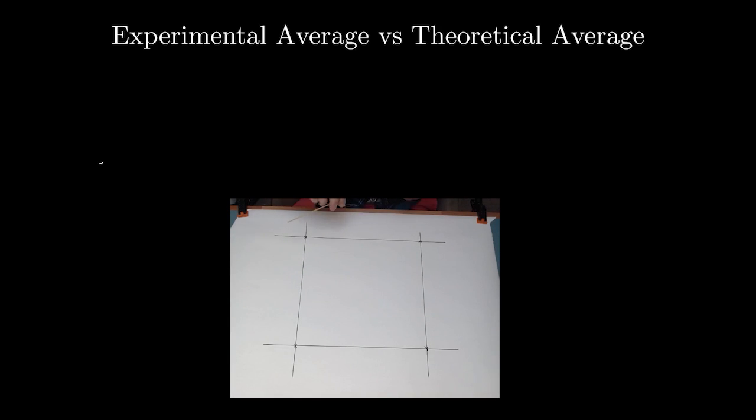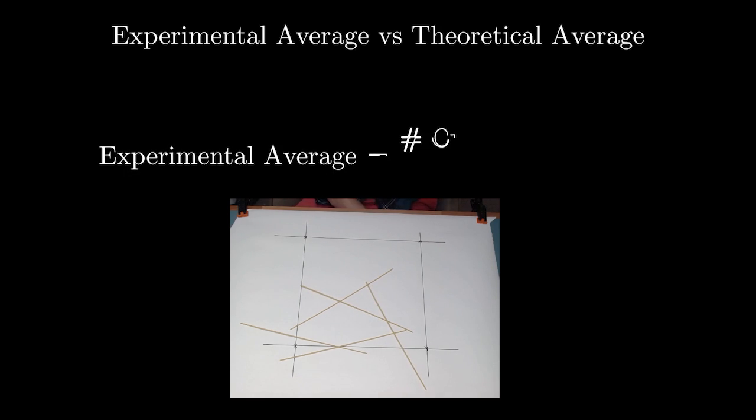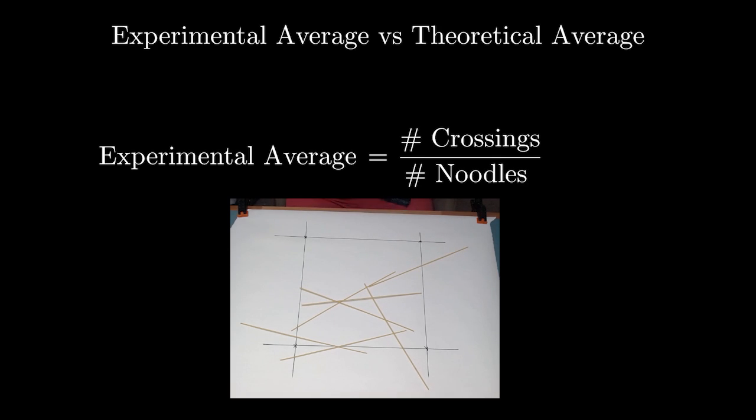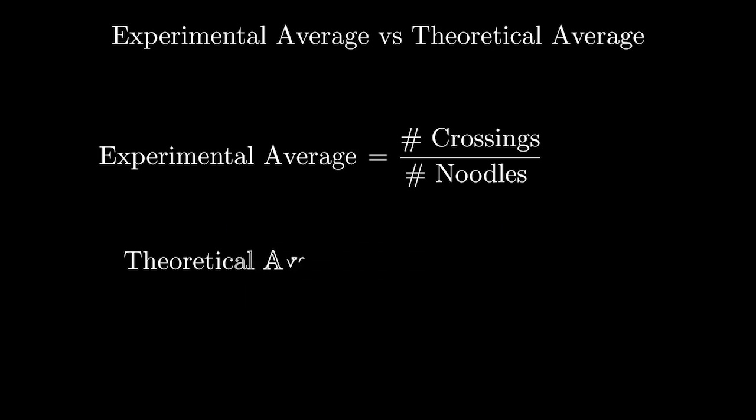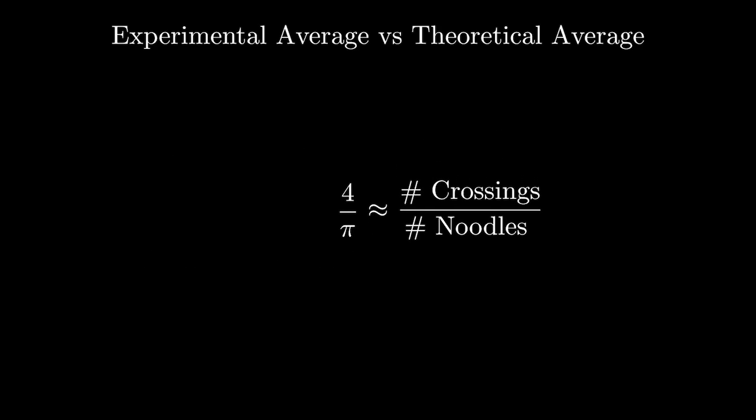In the Buffon noodle problem, we are throwing noodles instead of dice, but the principle is exactly the same. The experimental average is just the number of crossings divided by the number of noodles. And the theoretical average turns out to be four divided by pi. This will be explained later on in the video. Since these two are approximately equal, we can rearrange the equation to get our approximation formula for pi.